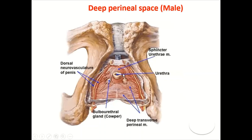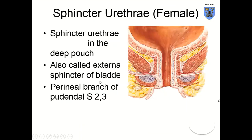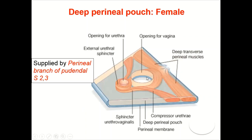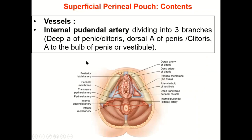Contents of the deep perineal pouch in males: membranous urethra with sphincter urethrae, bulbourethral glands, deep transverse perineal muscles, internal pudendal vessels and their branches, and the dorsal nerve of the penis. In females: part of the urethra with part of the vagina, sphincter urethrae or sphincter vaginalis, deep transverse perineal muscles, internal pudendal vessels, and the dorsal nerve of the clitoris. All muscles are supplied by the perineal branch of the pudendal nerve.